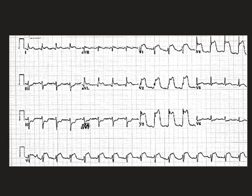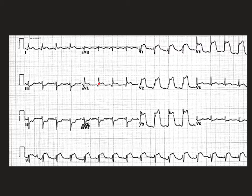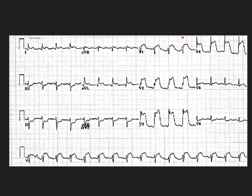Looking over this EKG even briefly, we are noticing massive problems. It looks like we have significant elevation in V1 through V4, and even a good amount of reciprocal changes and depression in 2, 3, and AVF. If you have a keen eye, you could even say you might have a little bit of elevation in AVL and a little bit in lead 1. Our big issues are the elevation in V1 through V4. Lead 1 and AVL are probably just splash damage from the amount of ischemia coming from this region of the heart.